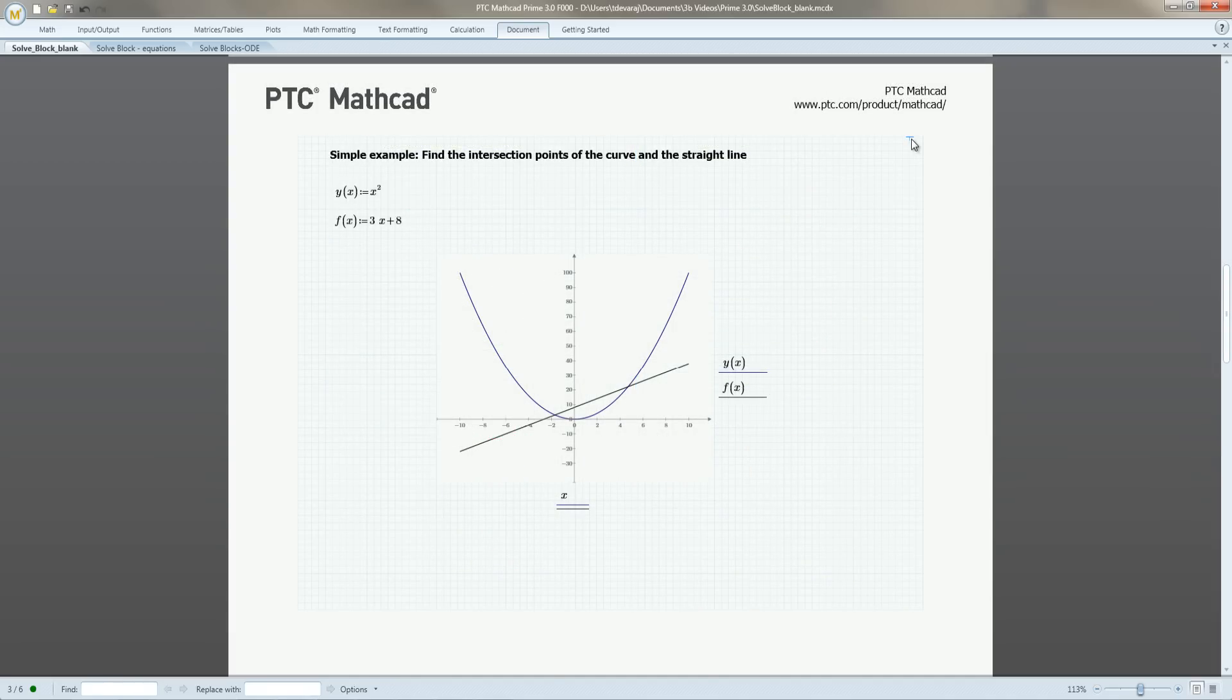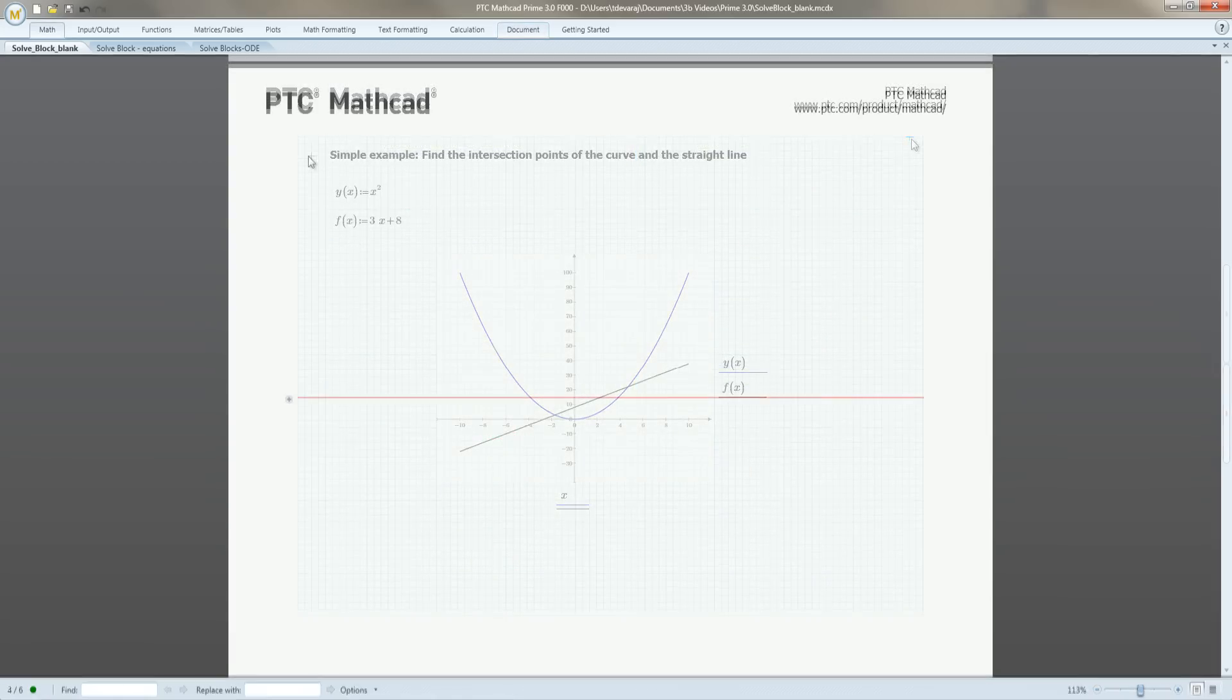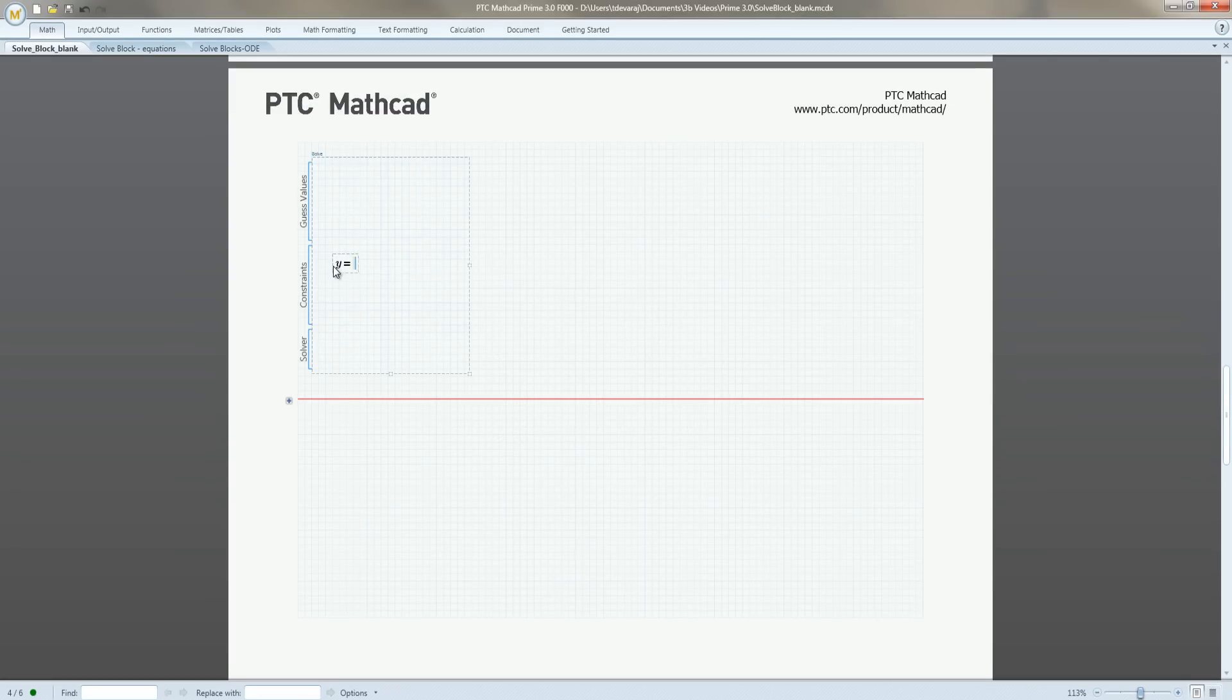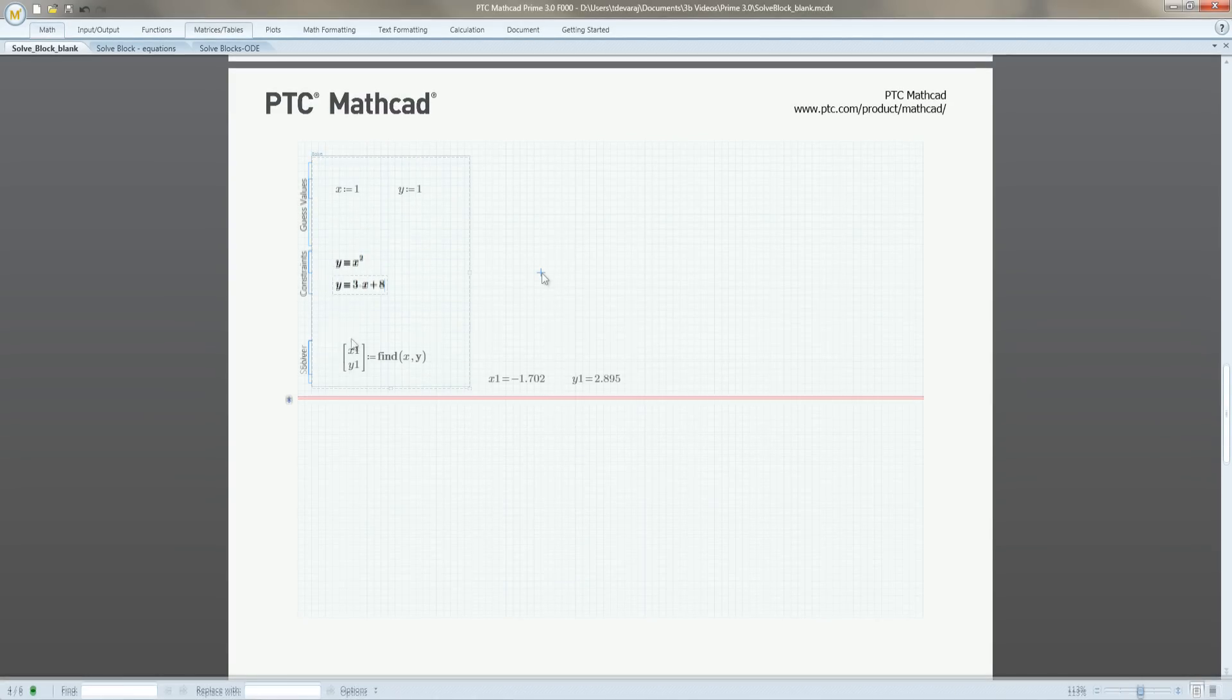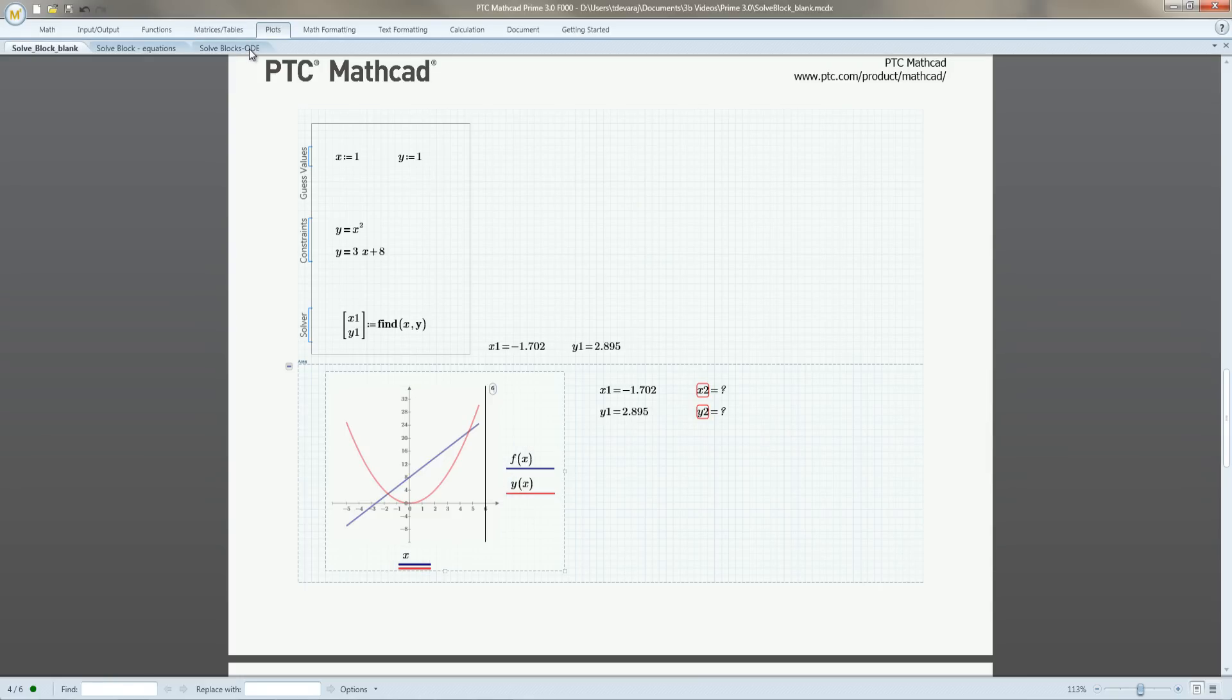To start, let's find the intersection of a parabola and a straight line. We add a Solve Block and enter the two equations. We plot the results from the Solve Block and verify the intersection with vertical and horizontal markers.